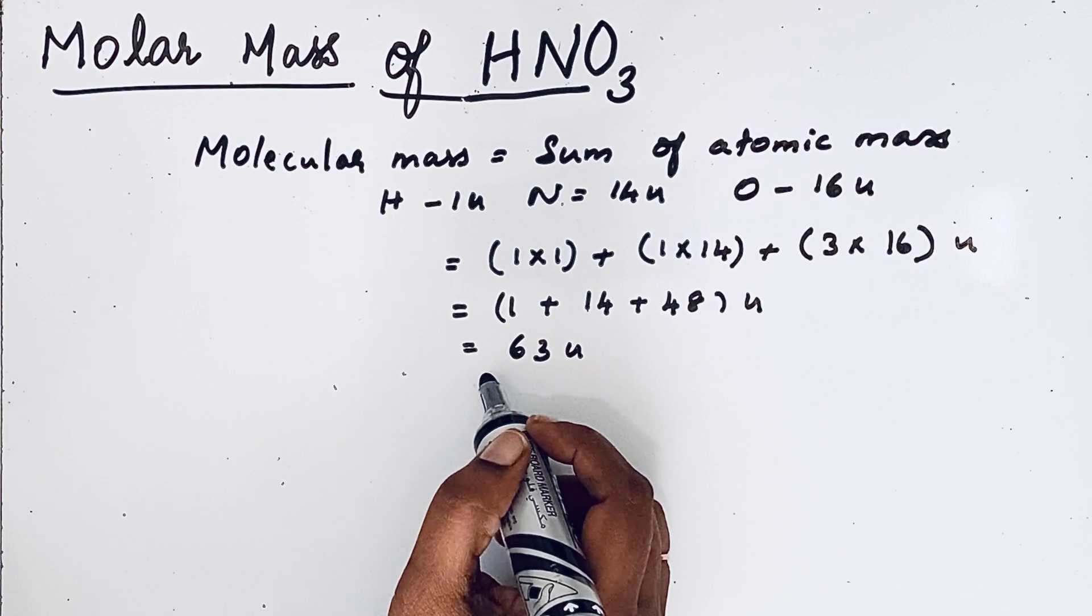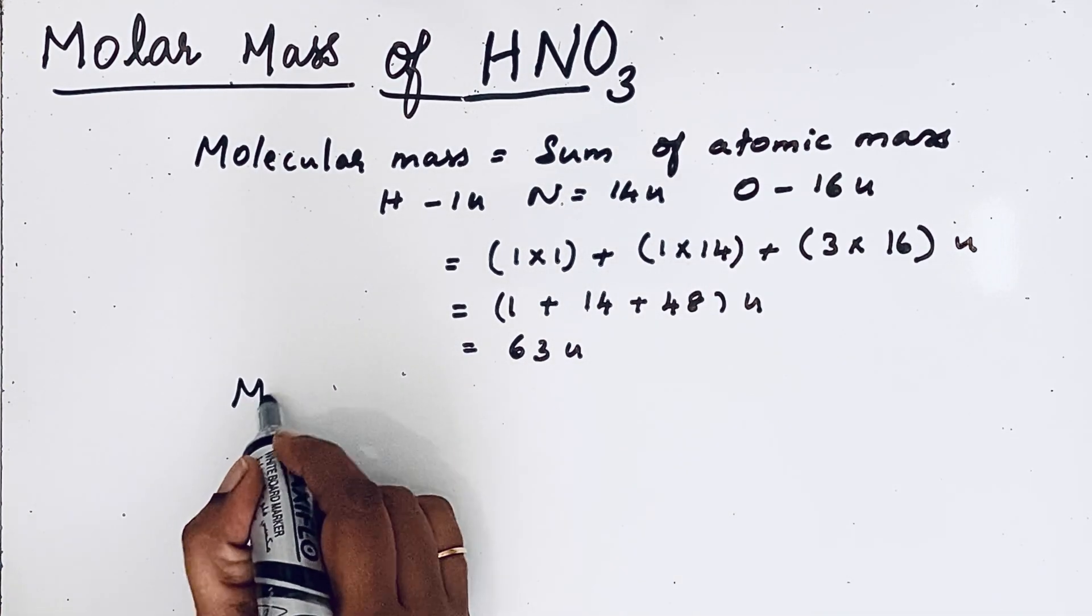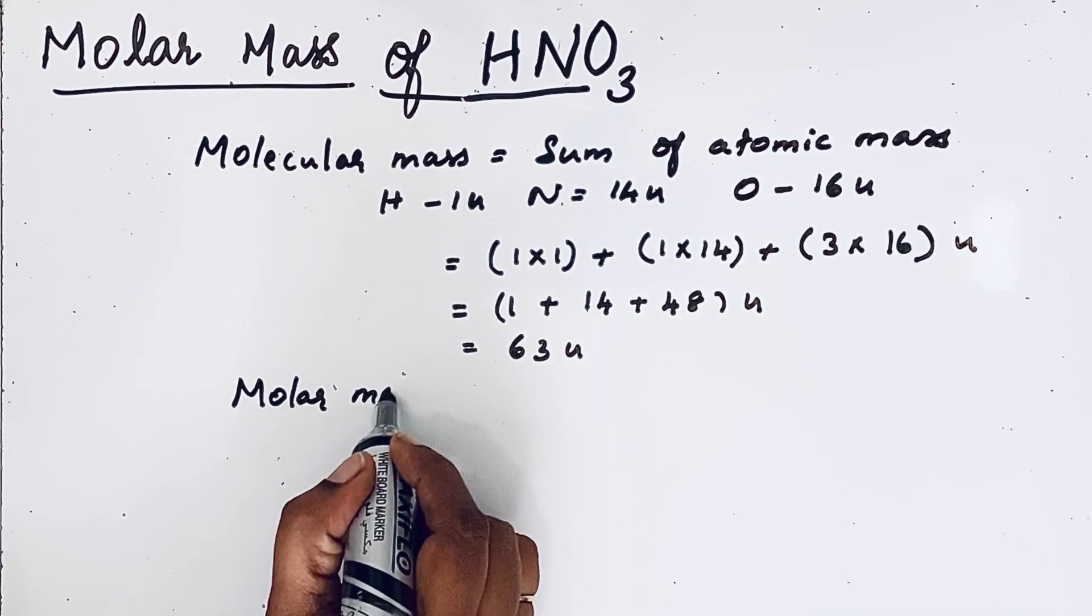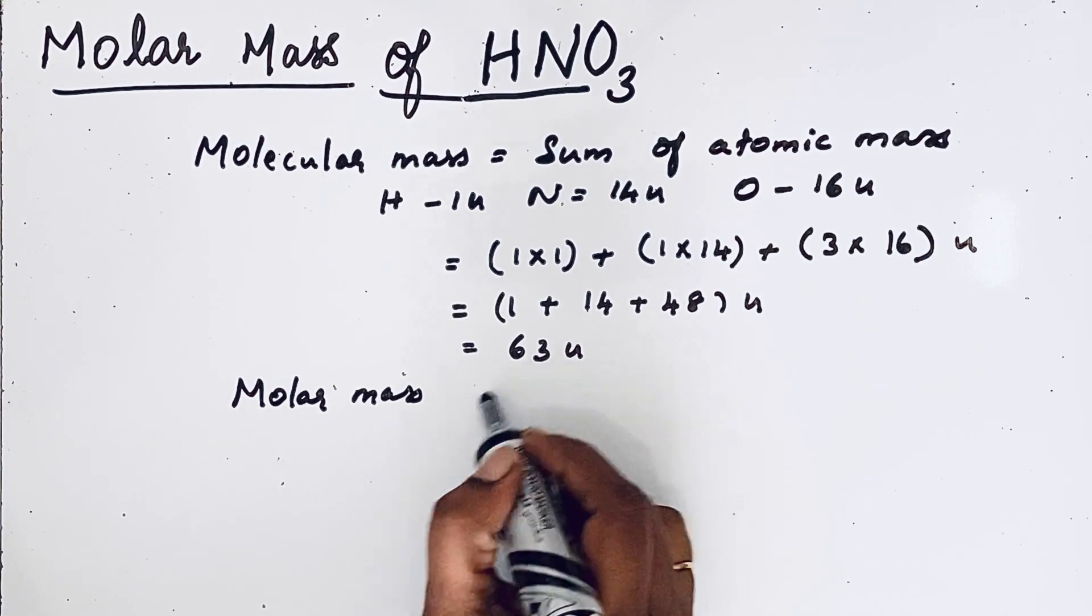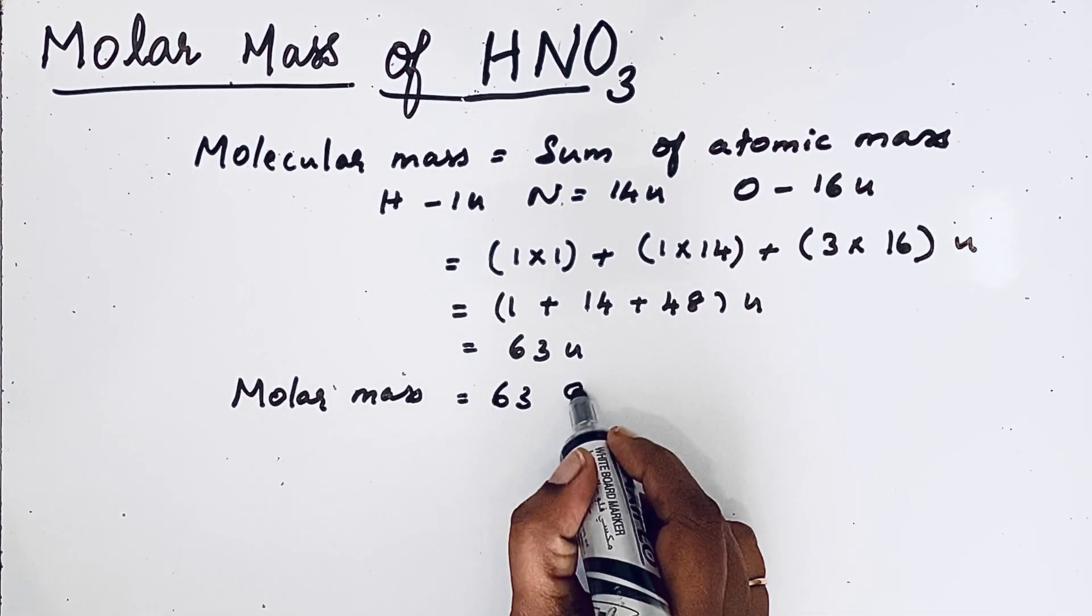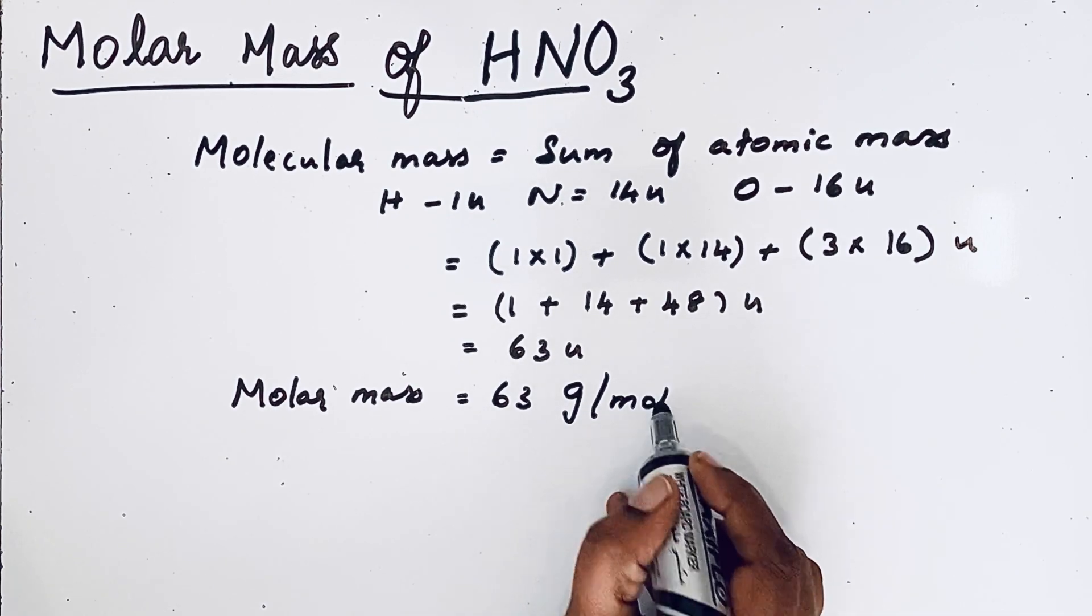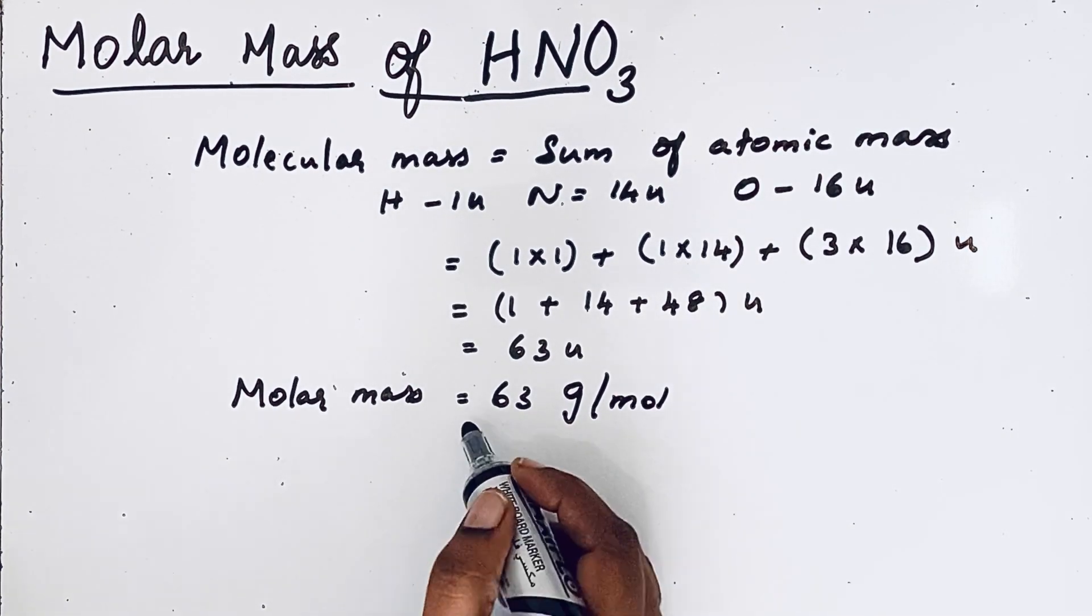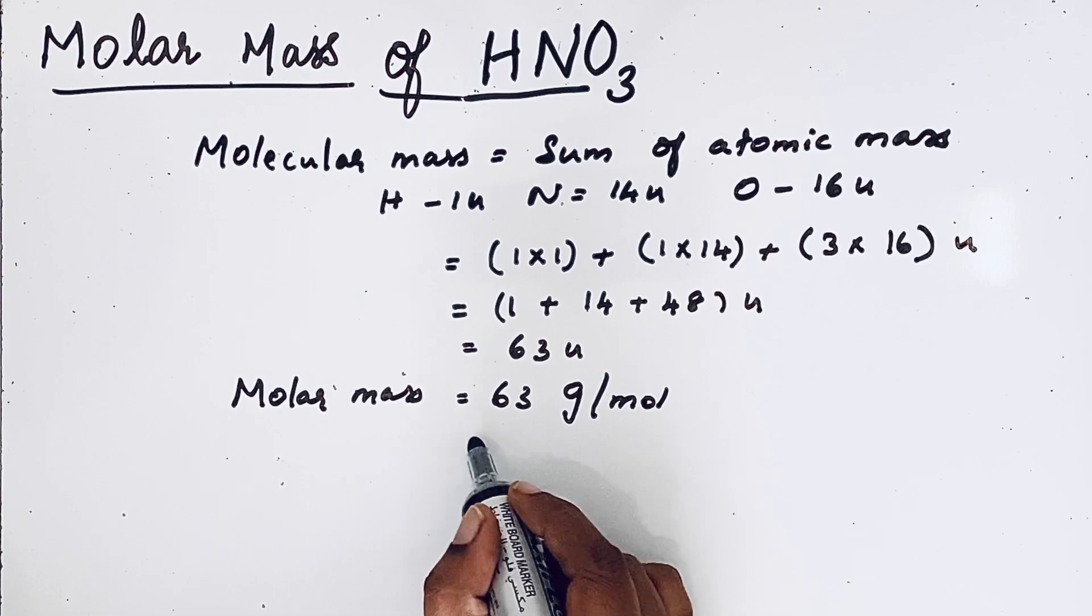So, this is molecular mass. To find the molar mass, we are keeping the numerical value the same, only we are changing the unit into gram per mole. So, molar mass of HNO3 is 63 gram per mole.